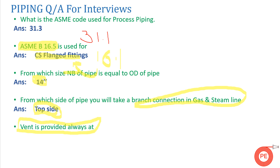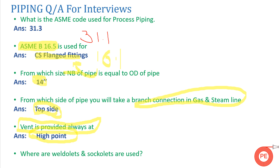Why is a vent provided? A vent is provided to remove gases or air while testing at the time of commissioning. The location of the vent — where is it provided? The vent is always provided at the highest point, so there is no gas entrapment, and while purging is done everything within the pipe can be removed.